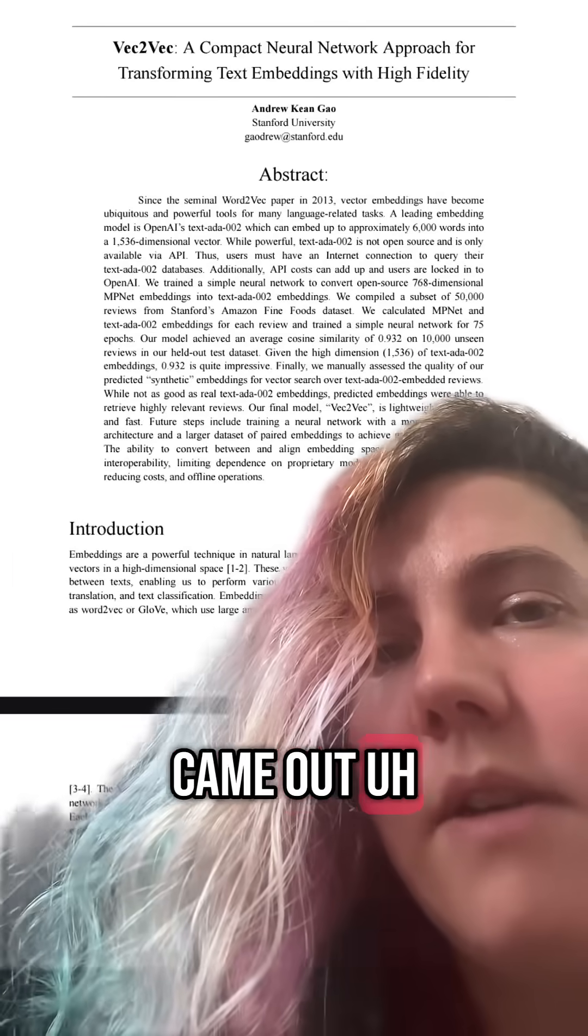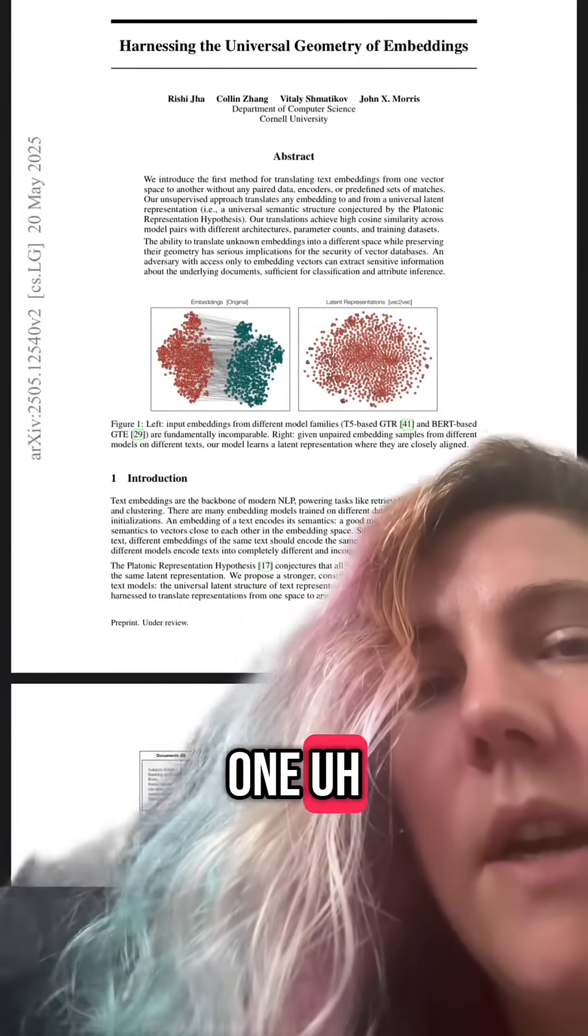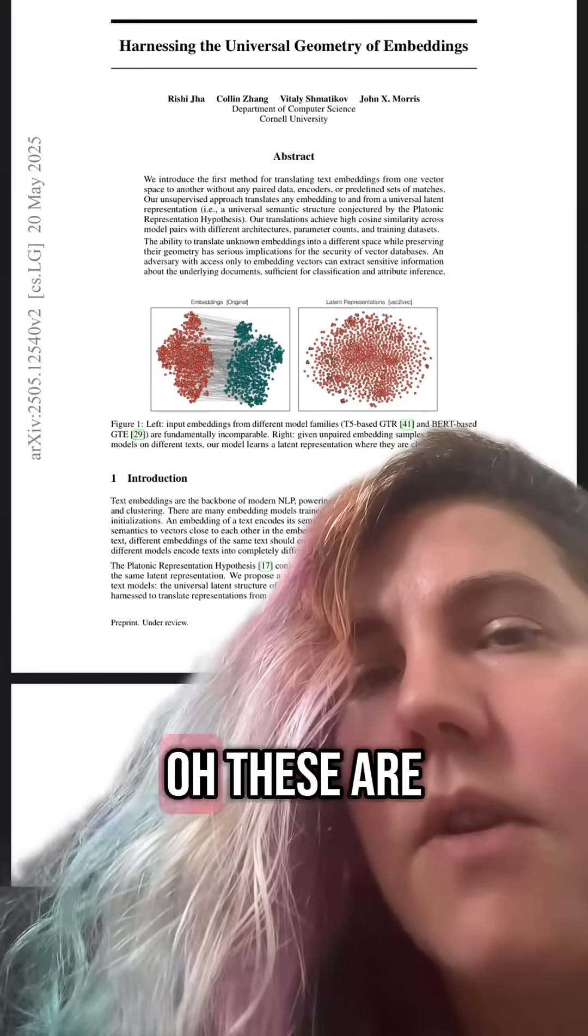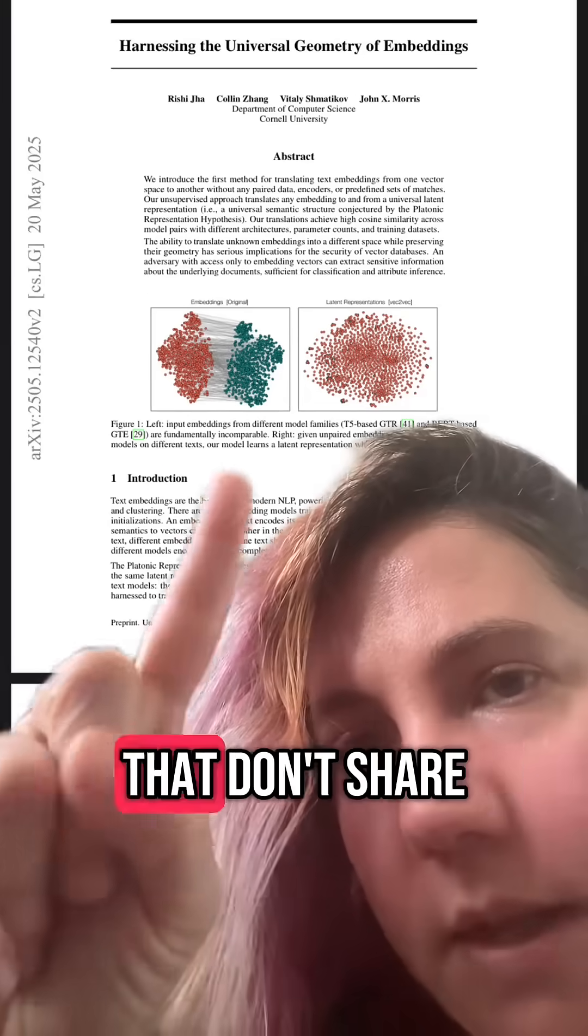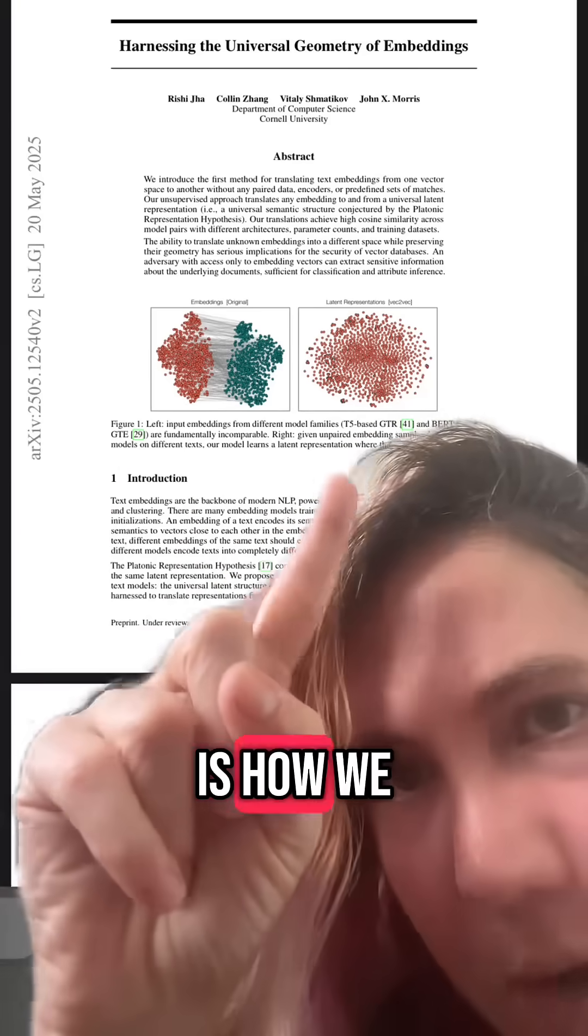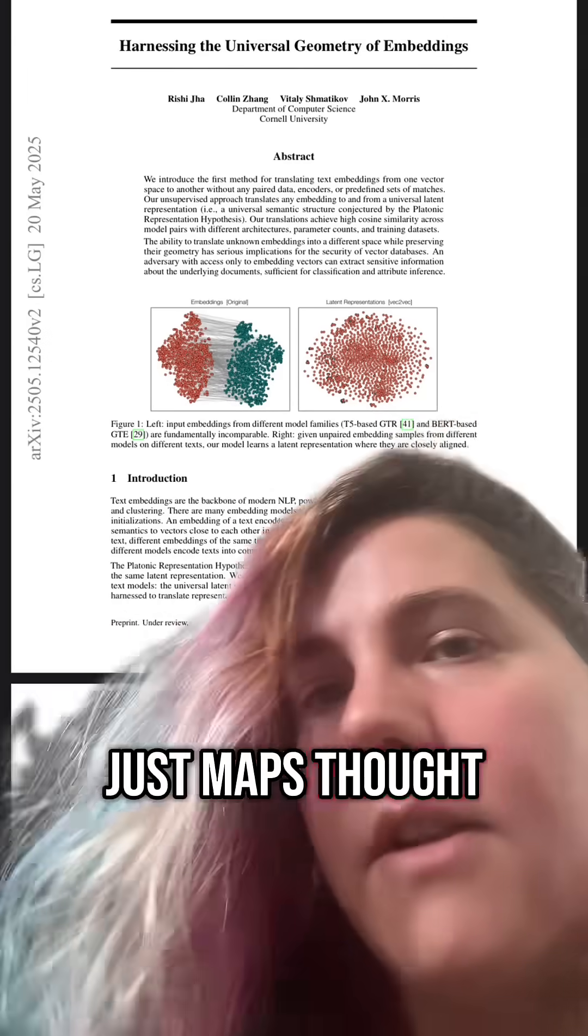The paper originally came out written by this guy back in last summer. This one talks about how do we get to a universal encoding. So these are two language models that don't share the same brain structure, and then this is how we got them to share a brain structure, basically. Or really, it just maps thought to thought.